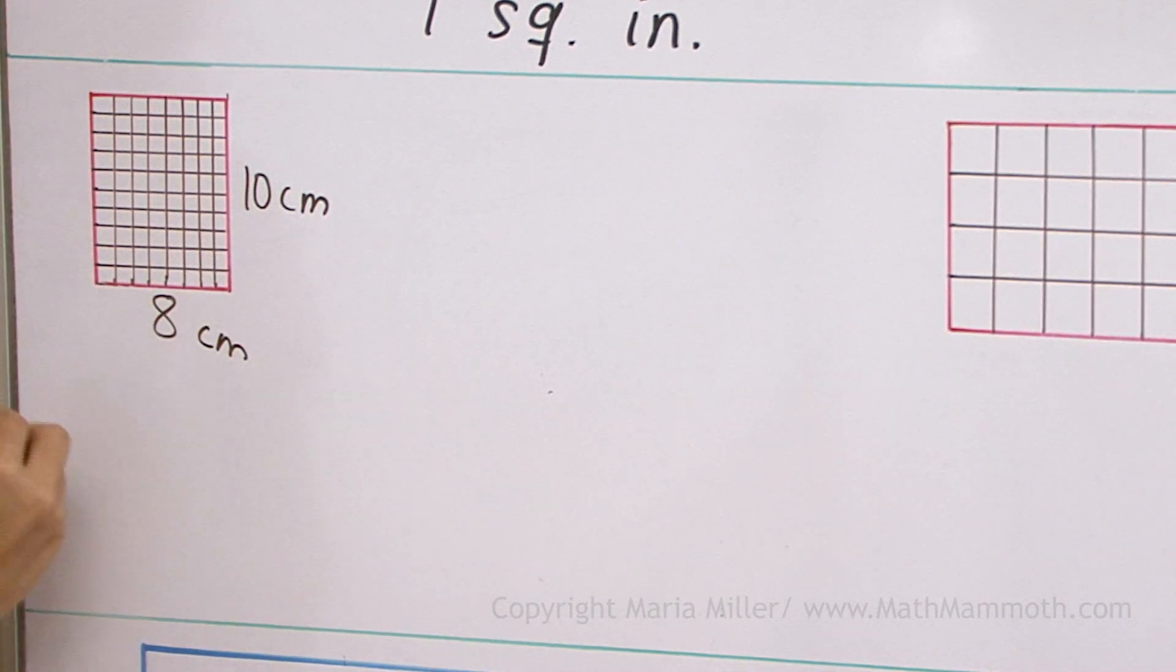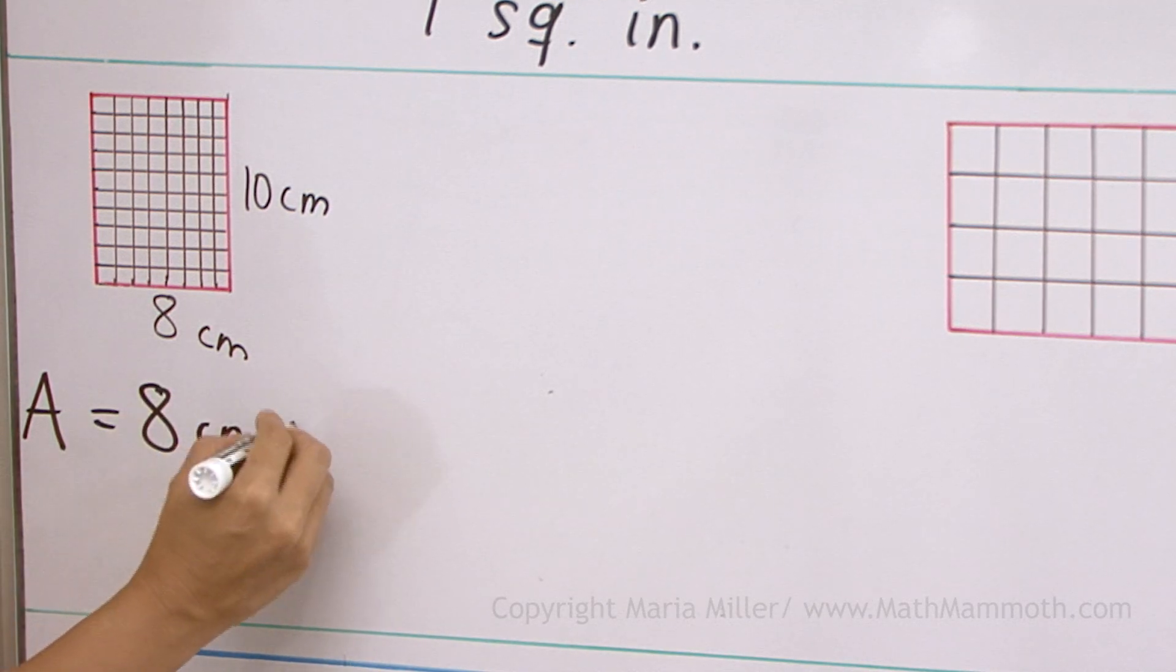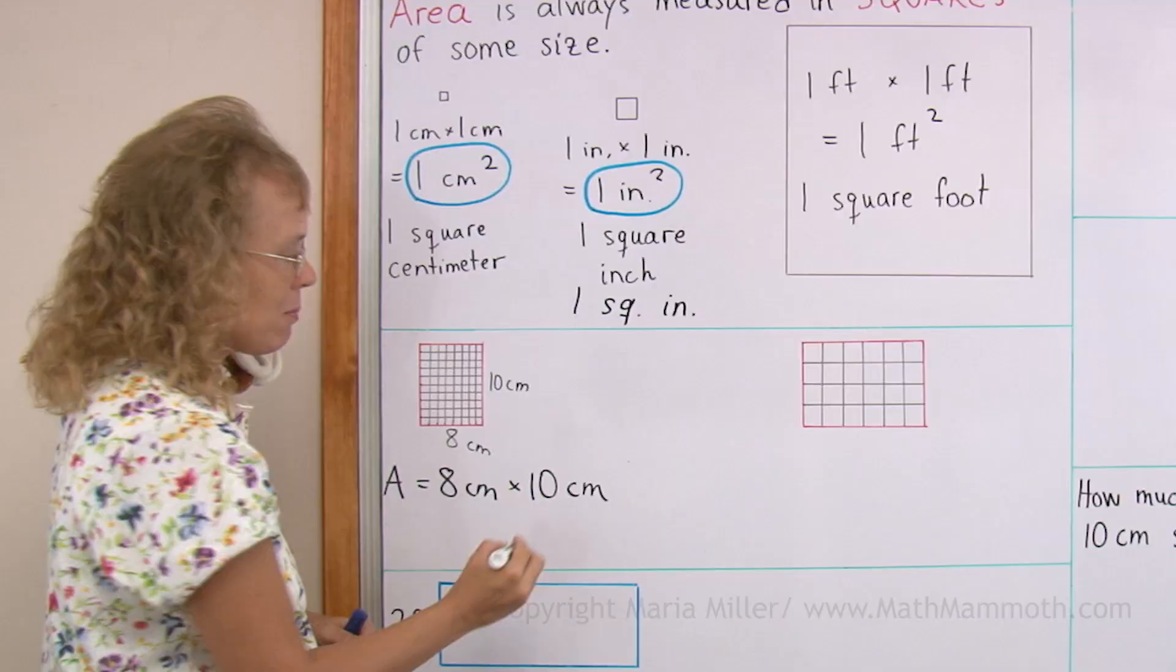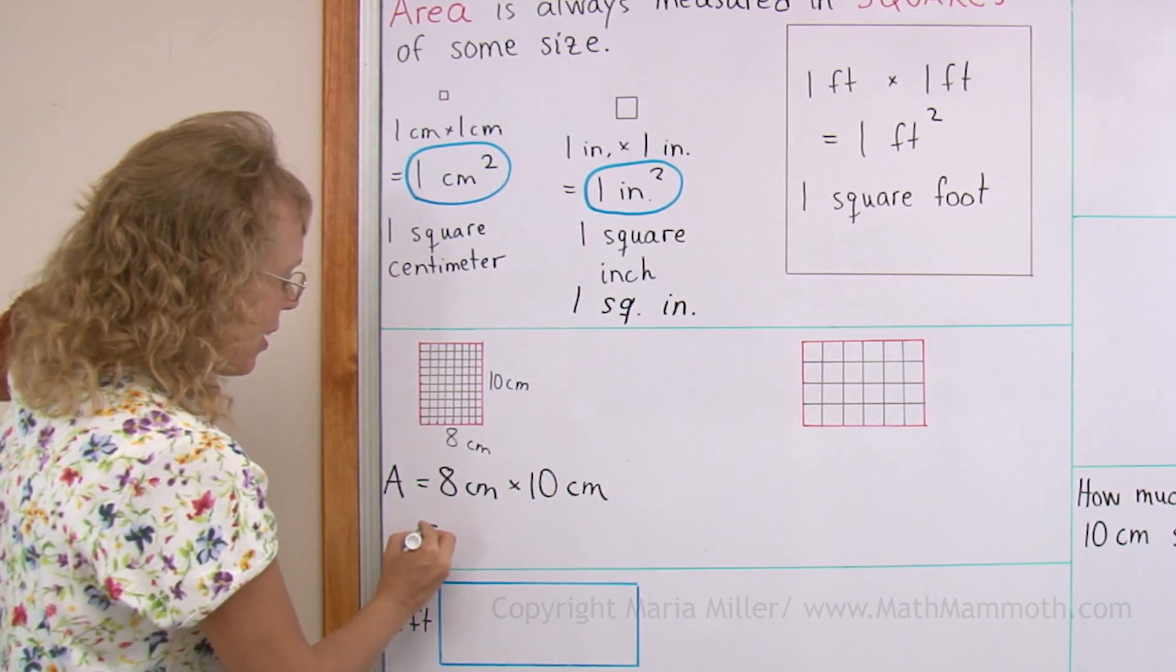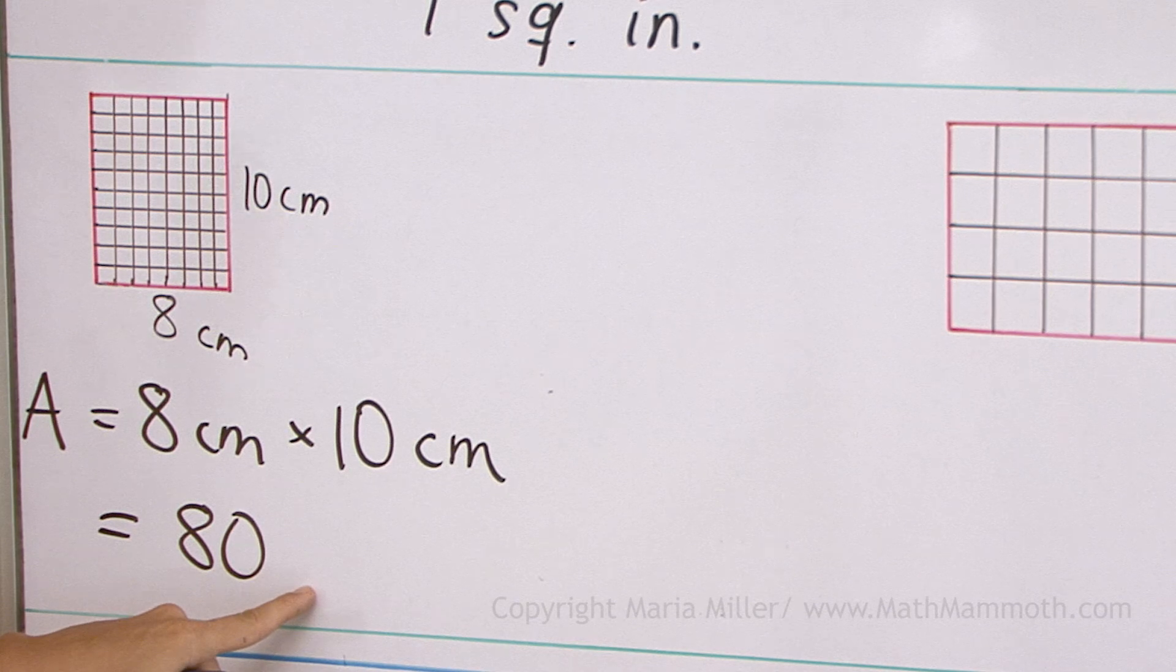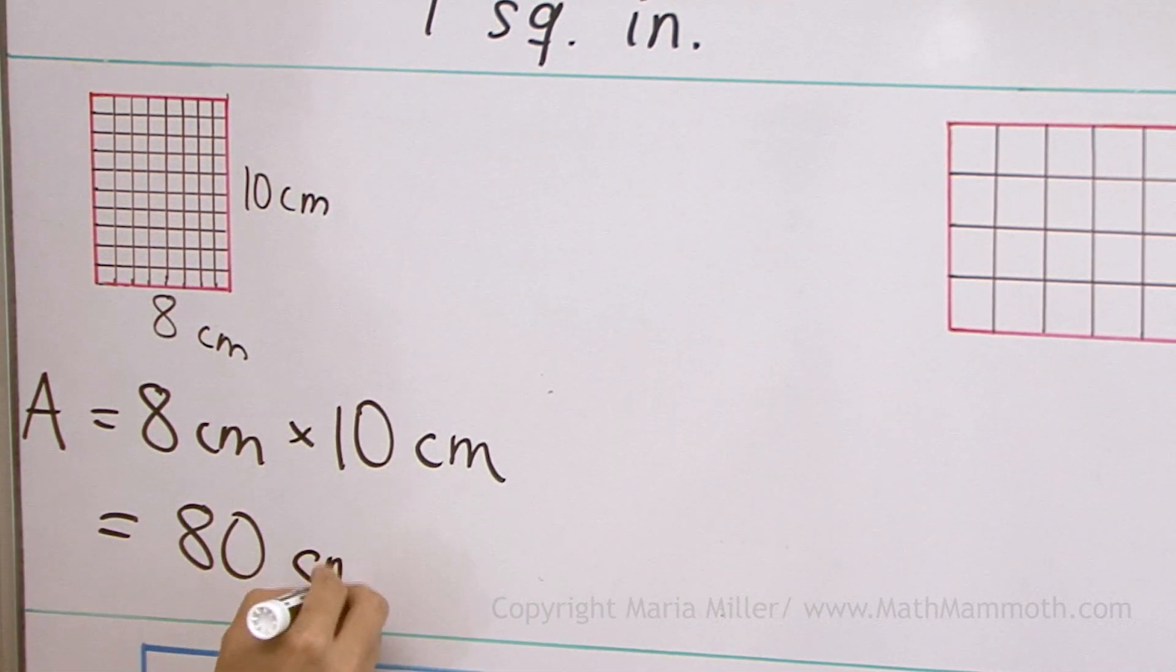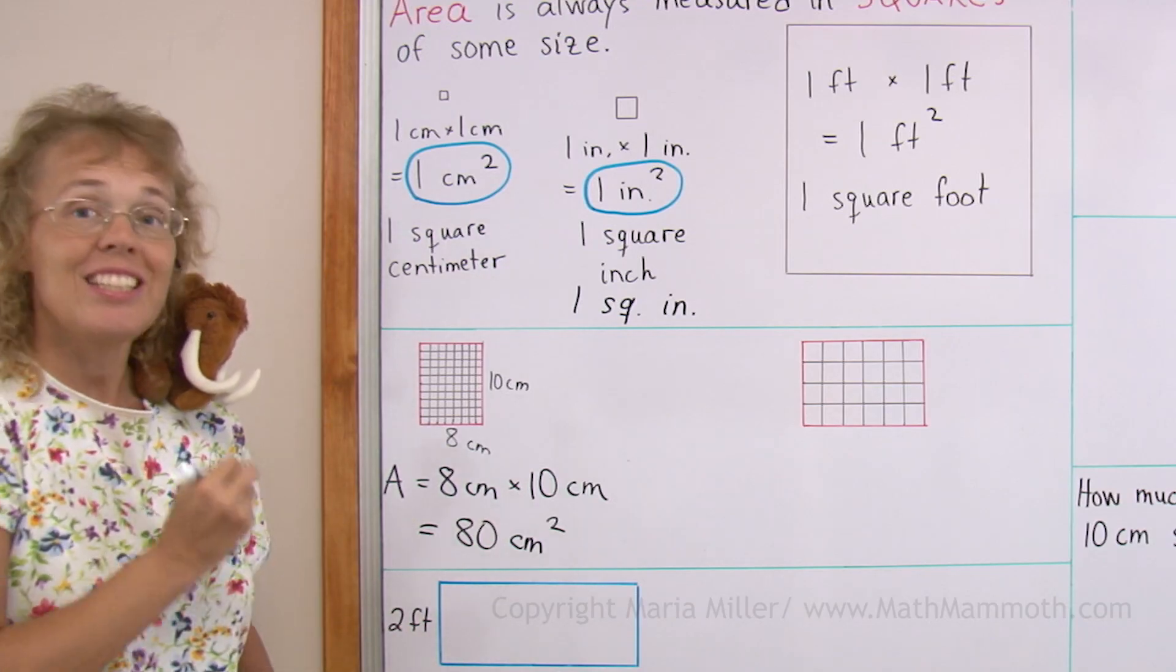So to calculate the area, I would write 8 centimeters times 10 centimeters. I multiply, and then I get 80. And now my unit for the area—this is very important that you put the area unit there—it is the square centimeters like that. 80 square centimeters.